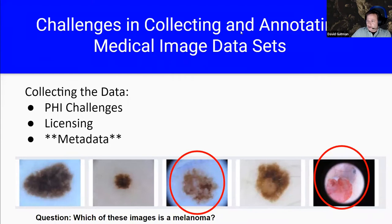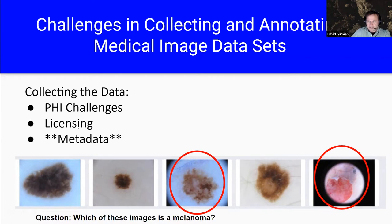I've been involved in projects across domains and the biggest problem now that AI has had exponential growth is really getting the data. There are PHI challenges, licensing issues — in a large melanoma project across universities, some wanted Creative Commons licenses, some only for non-commercial uses, some wanted recognition — and then particularly the metadata quality problem. I'd look at melanoma images and couldn't identify which ones were melanomas — they all looked bad to me — which raises the question of how we even establish ground truth.